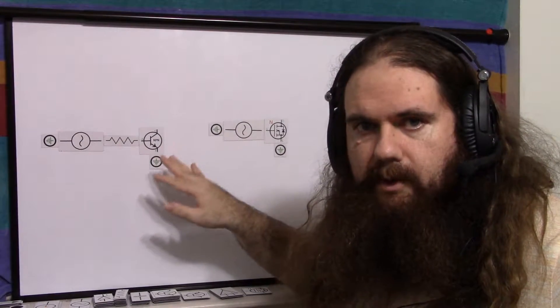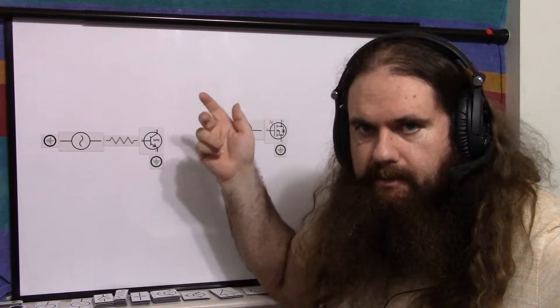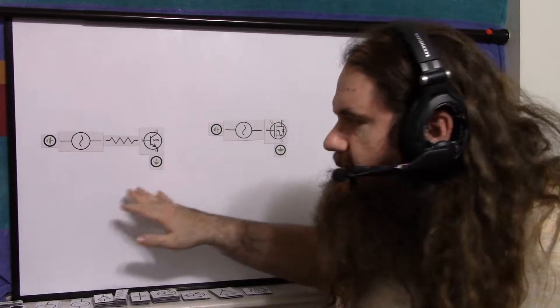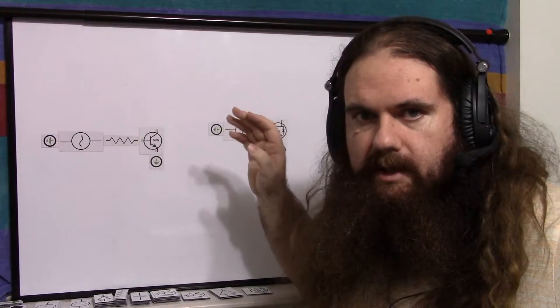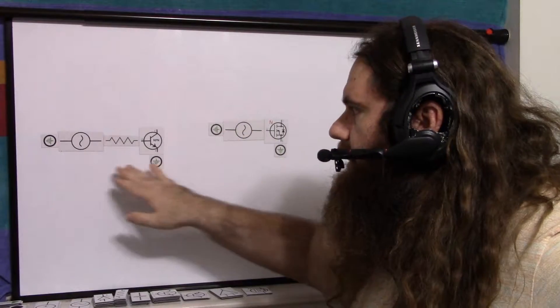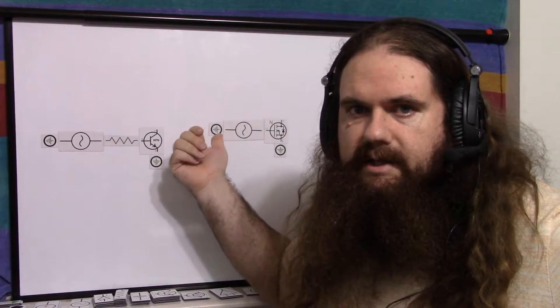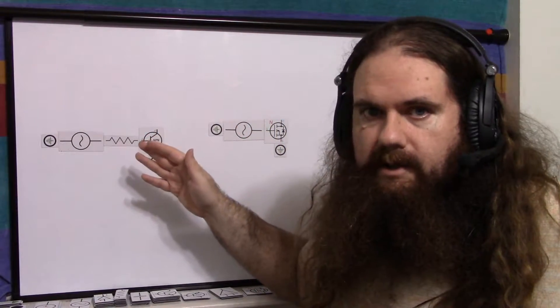BJTs and MOSFETs are the most common type of transistor that you're going to interact with on a breadboard. In the most common simple arrangements like this, where you're driving the base or gate and you've got the collector or drain driving a load, in the very simple switching arrangement, they're basically the same thing. They basically operate in the same way for digital and analog signals.